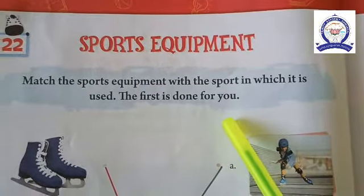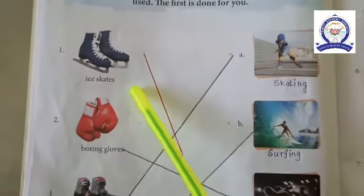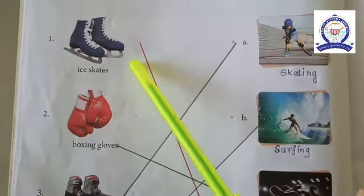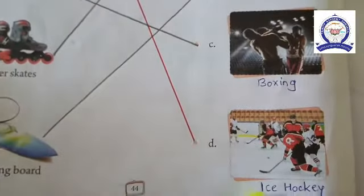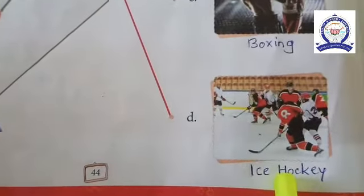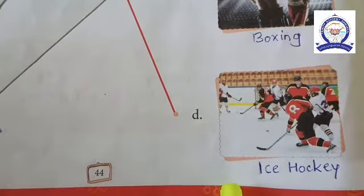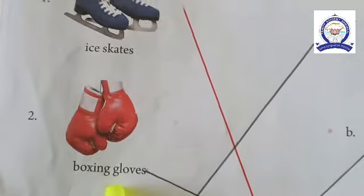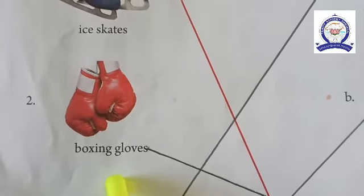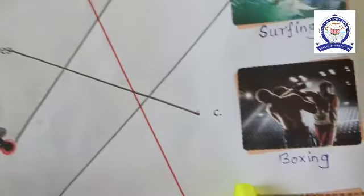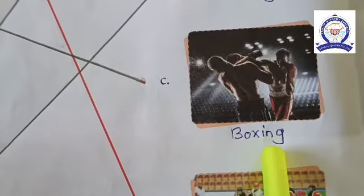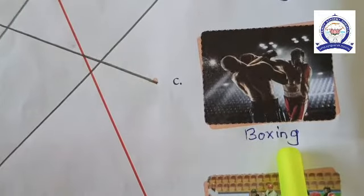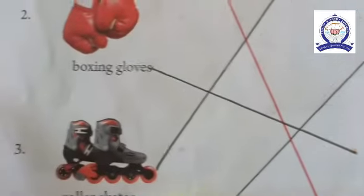The first one is ice skates. Ice skates are used in ice hockey. The second one is boxing gloves. Boxing gloves are used in boxing.